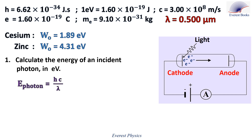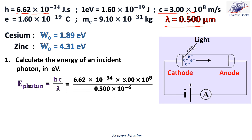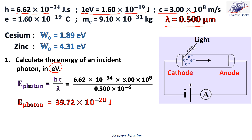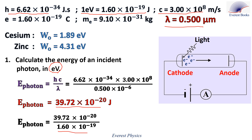The energy of the photon is given by the expression hc over lambda, where h is Planck's constant, c is the speed of light in vacuum, and lambda is the wavelength of the incident light. Replacing each physical quantity by its value, we get the energy of the photon as 39.72 times 10 to the power minus 20 joules. Since 1 electron volt equals 1.6 times 10 to the power minus 19 joules, dividing gives the energy of the photon as 2.48 electron volts.